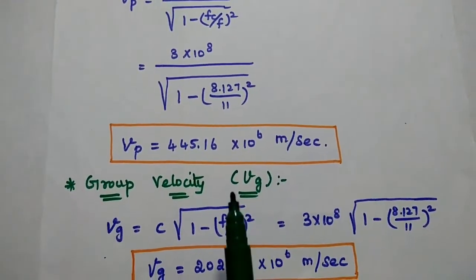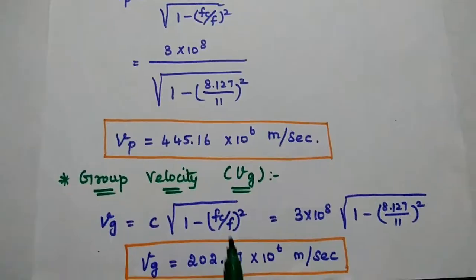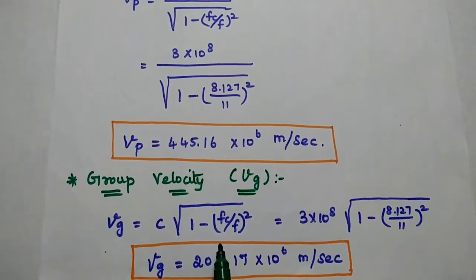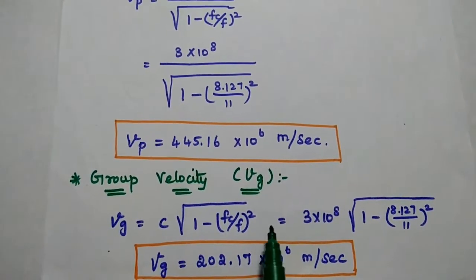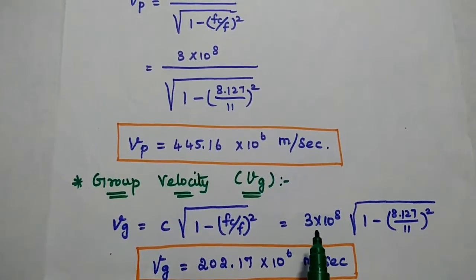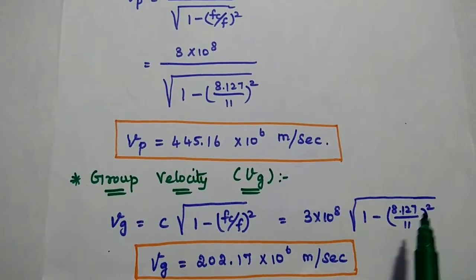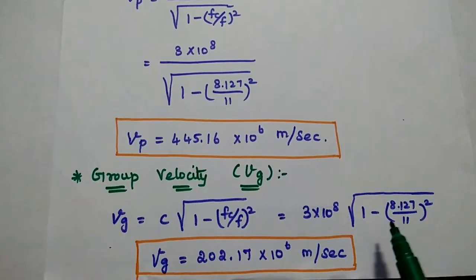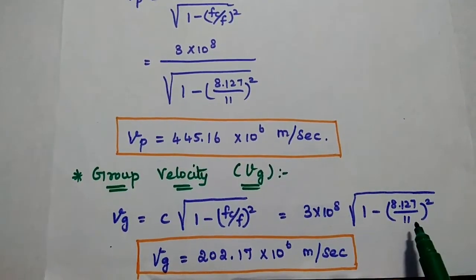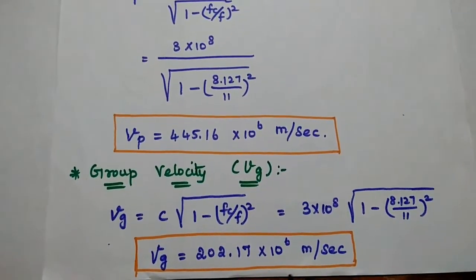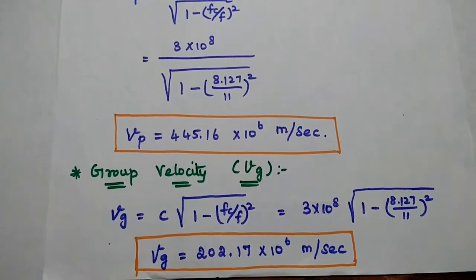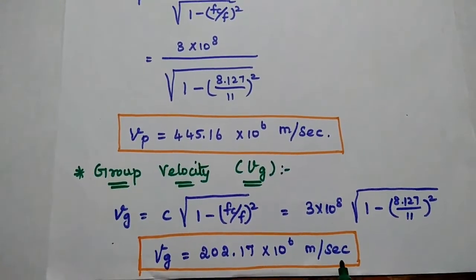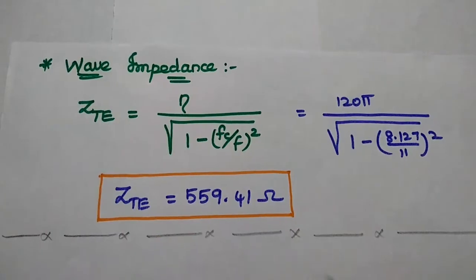Next, the group velocity v_g = c × sqrt(1 − (f_c/f)²). With c = 3×10⁸ and f_c/f = 8.127/11, we get v_g = 202.17×10⁶ meters per second.